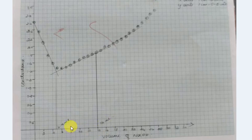So: 14 minus 4.9 gives 9.1 ml for the acetic acid neutralization volume. We then proceed to the calculation part.